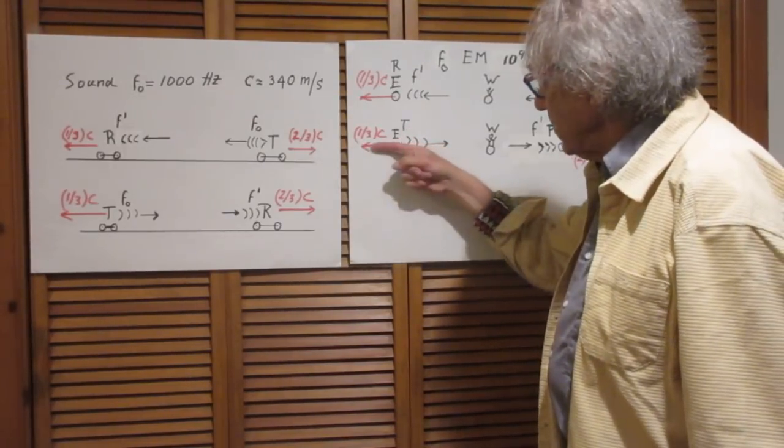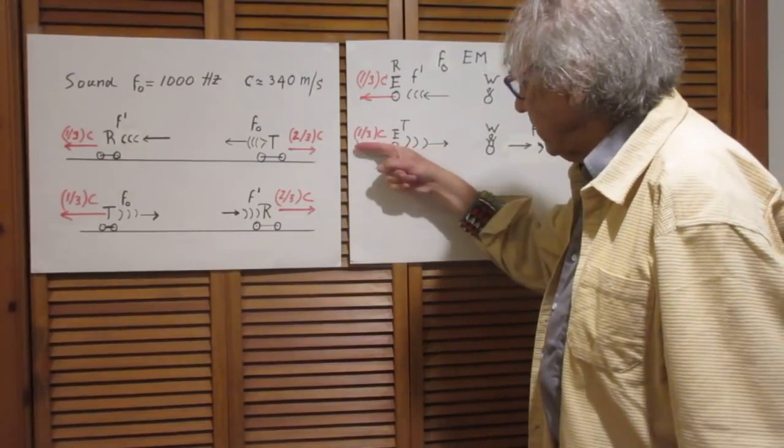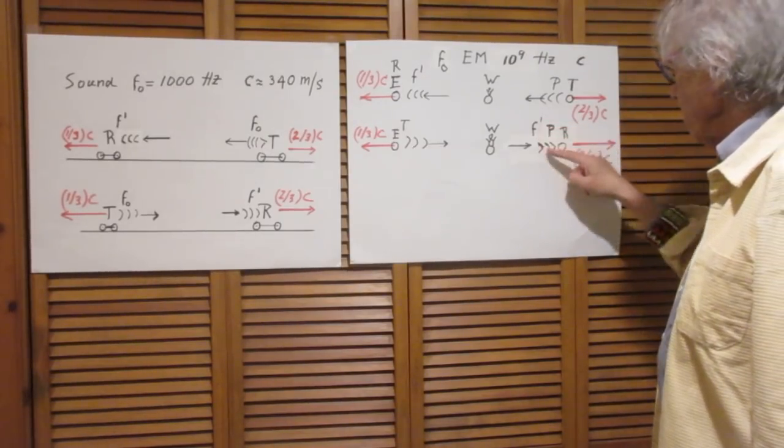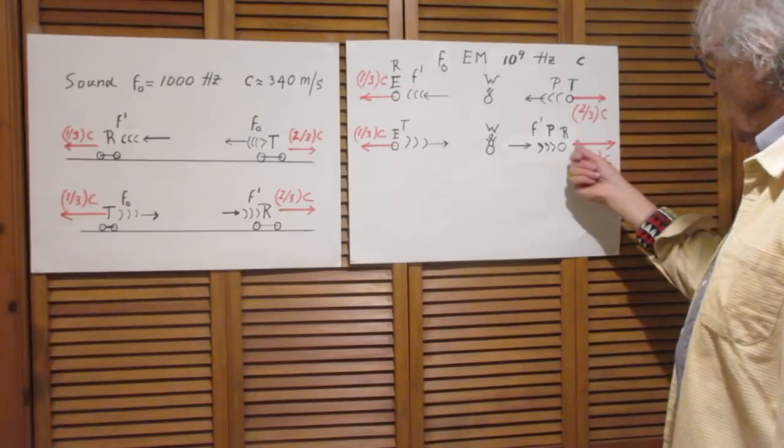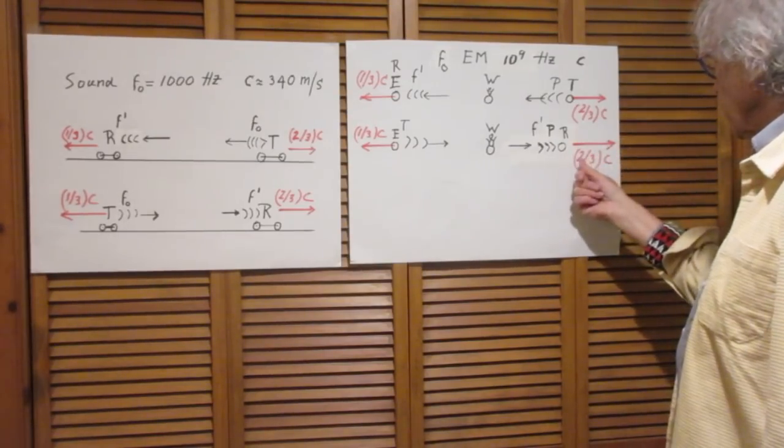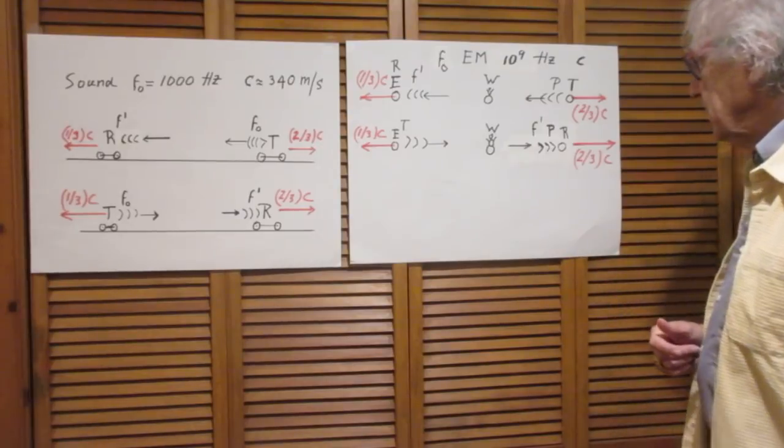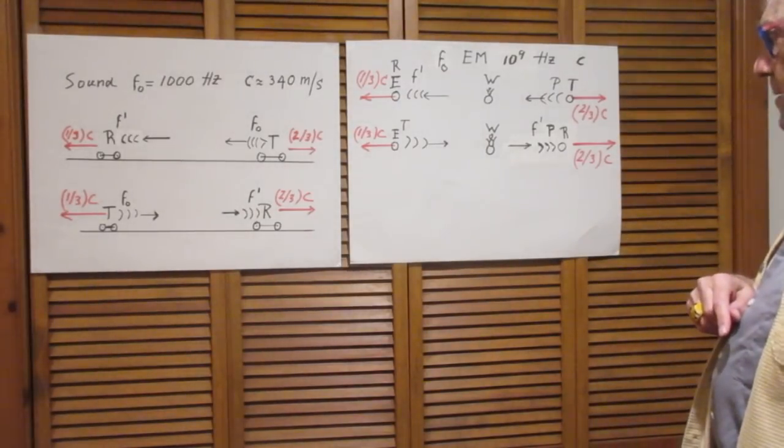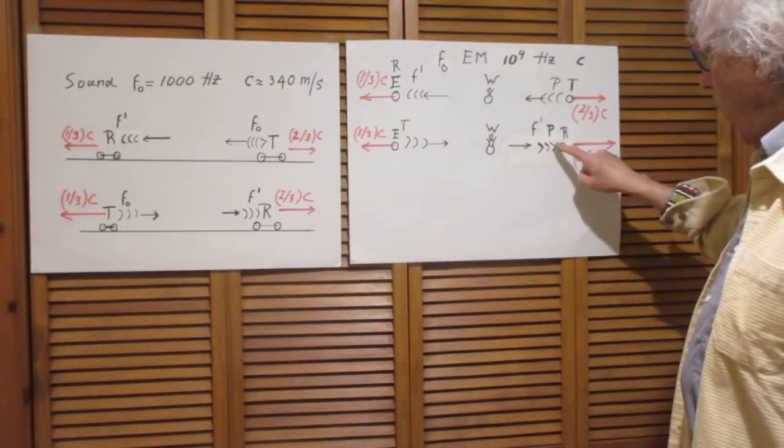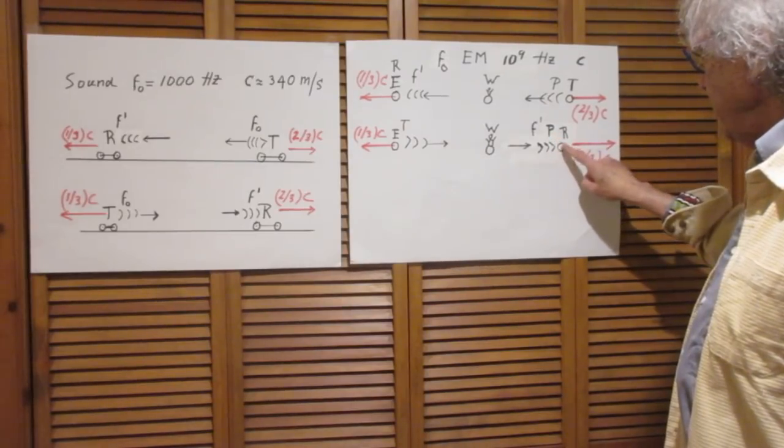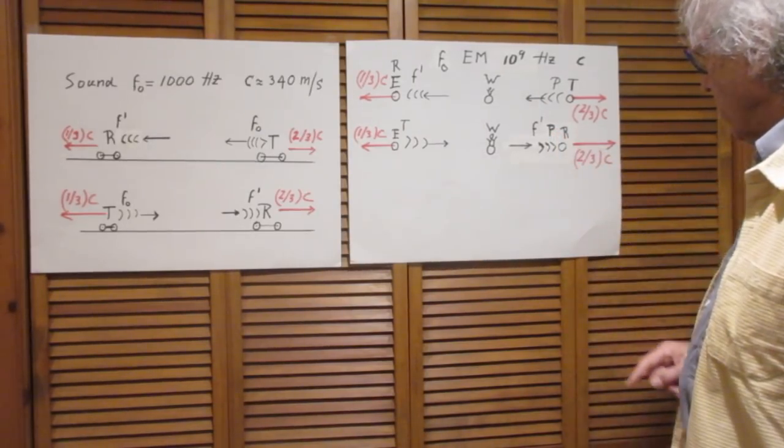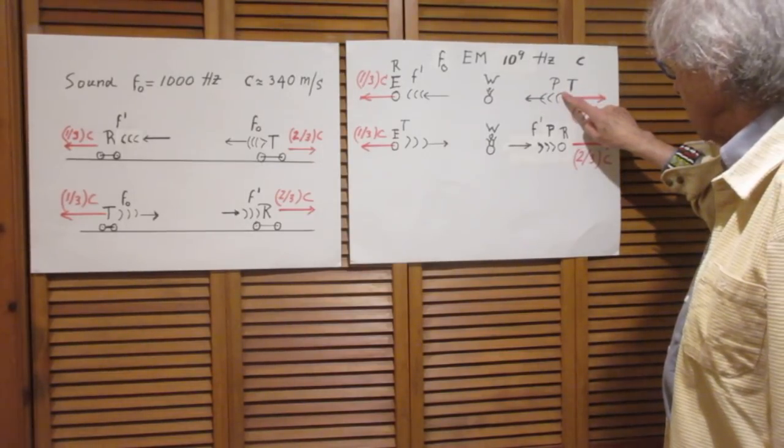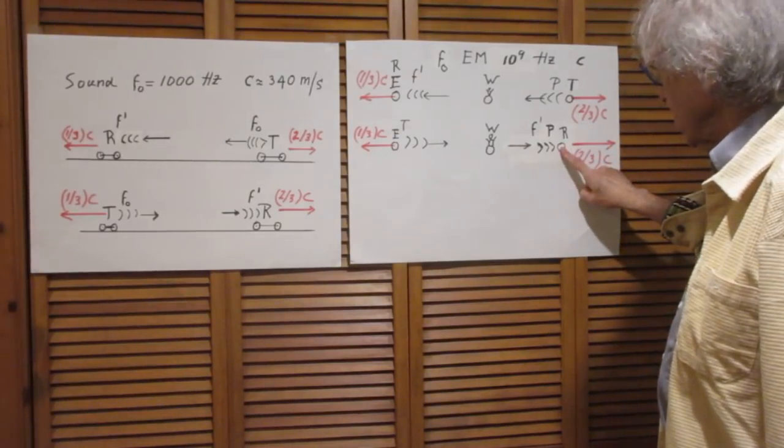Now comes answer number four. Now the transmission comes from planet E, Einstein, which is moving with the speed one-third the speed of light in this direction, and it is received now at planet Pythagoras which is moving with the speed two-thirds the speed of light in this direction. If the frequency as recorded on Einstein's planet is one gigahertz, what now is the frequency that is received on the planet Pythagoras? This I want you to have answer number three, this is answer number four.